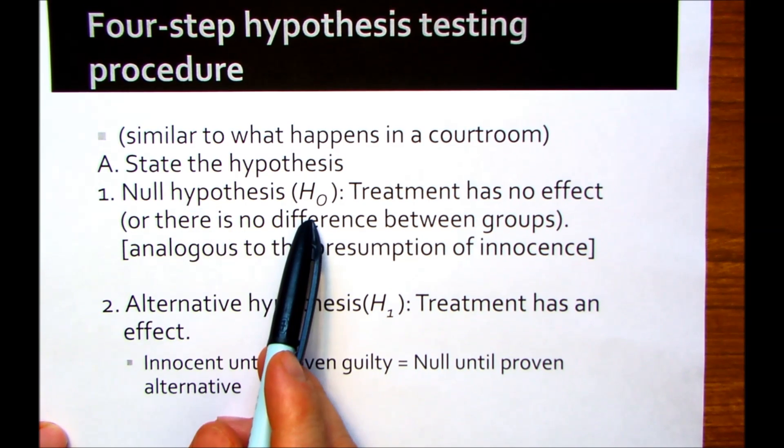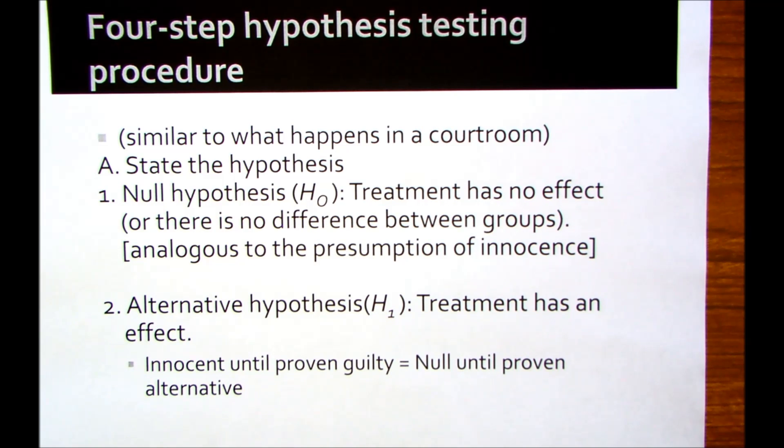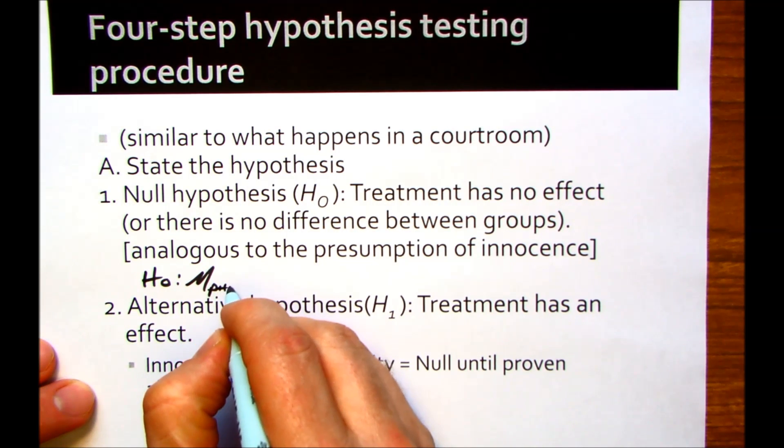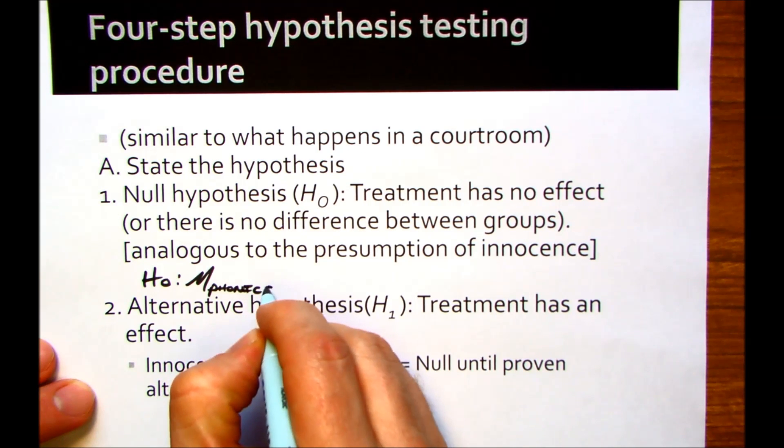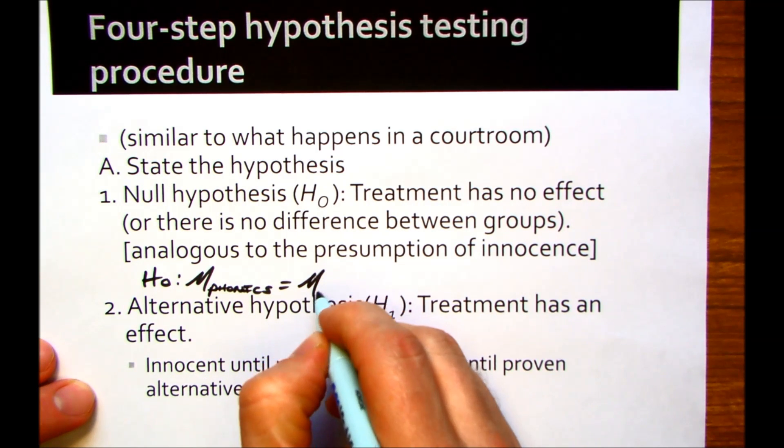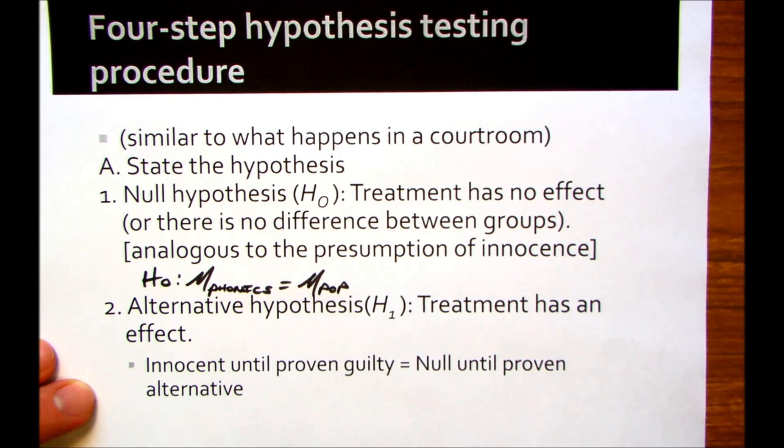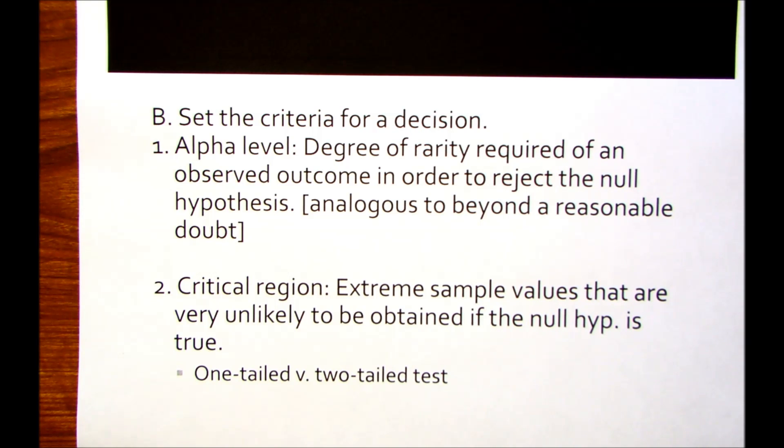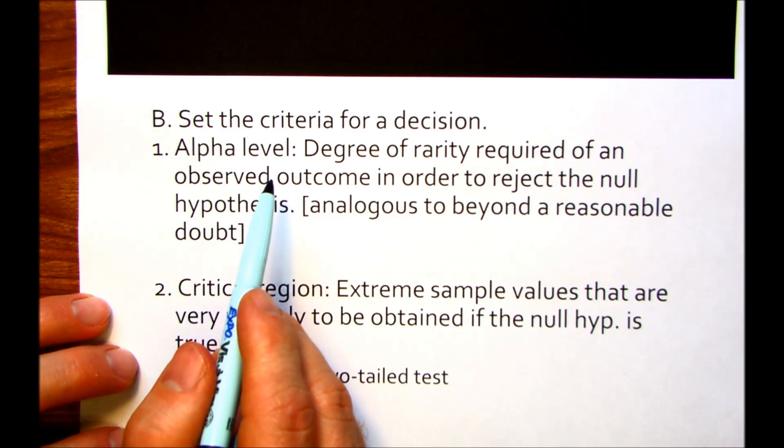Basically the structure of the z-score is just the obtained or observed difference divided by the difference due to chance. That's an important thing to keep in mind because that's really the fundamental structure of all of those formulas. Just the observed difference divided by the difference we expected due to chance. And that z-score then tells us how much larger is the observed difference or obtained difference than what we'd expect by chance.